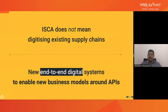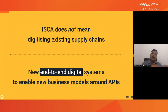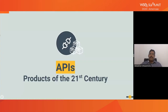To set expectations correctly: this integrated supply chain for API does not mean digitizing existing supply chains. There is an effort going on to digitize conventional supply chains, but we are not going to talk about that today. The integrated supply chain for API means how you would produce an API — a new end-to-end digital system to enable the business model around APIs — and how you take it to customers for them to consume.